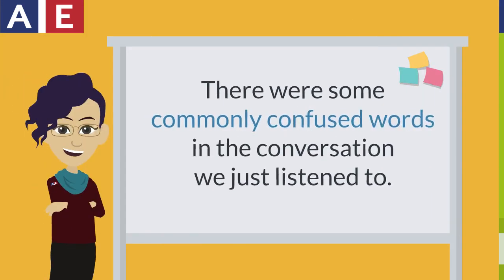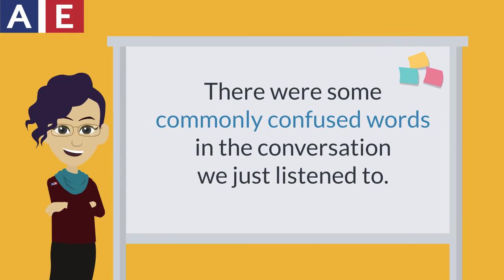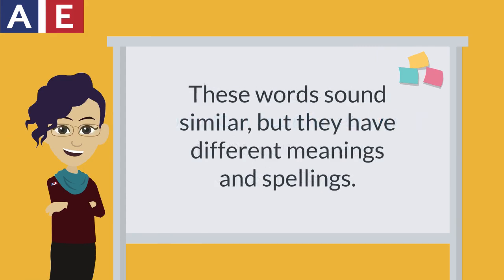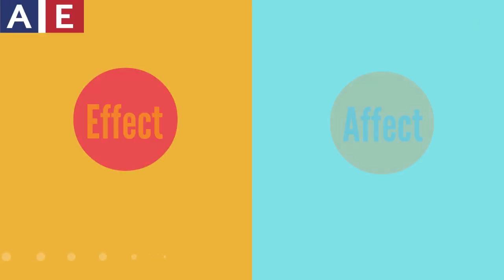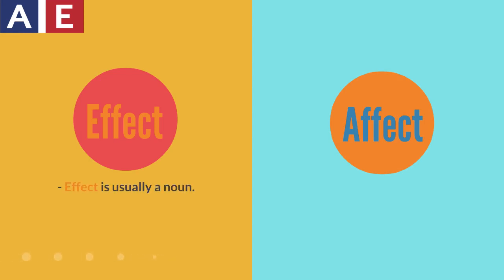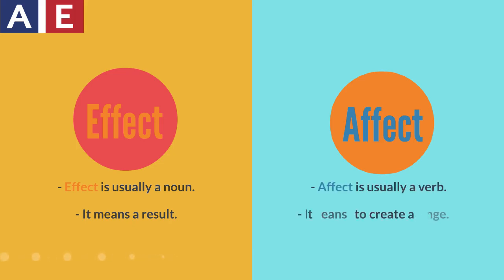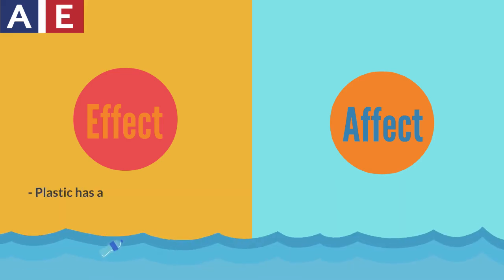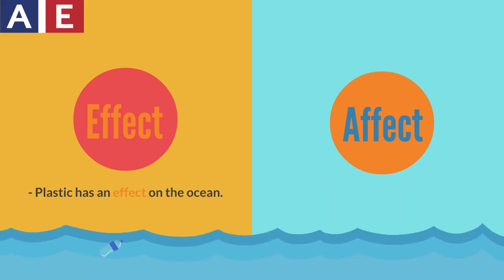There were some commonly confused words in the conversation we just listened to. These words sound similar, but they have different meanings and spellings. Let's talk about effect and affect first. Effect is usually a noun — it means a result. Affect is usually a verb — it means to create a change. For example: Plastic has an effect on the ocean. Plastic affects the ocean.